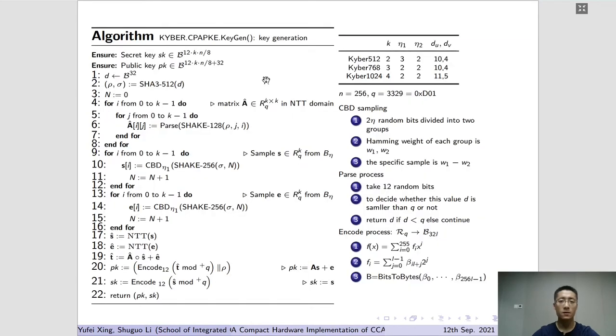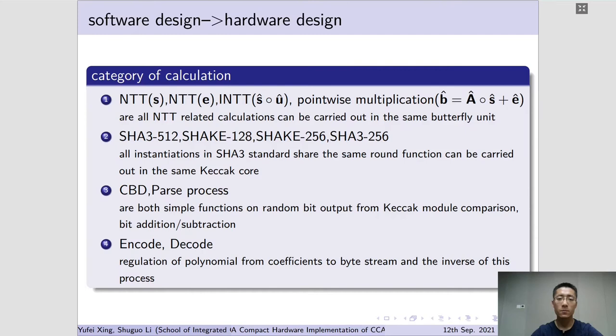Here is the algorithm description of key generation phase of Kyber. The main procedures include sampling and NTT-related calculations in polynomial multiplications. Several auxiliary procedures are listed as well, applying to random bits or intermediate results. Our start point is to come up with a proper way to arrange the order of sampling and NTT-related procedures to save cycles.